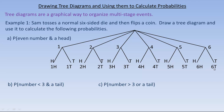If you use the fundamental counting principle, there are six ways to throw the die and two ways to flip the coin, so six times two gives you twelve. That's another reason there are twelve outcomes. So that's how you draw a tree diagram to simulate this experiment.